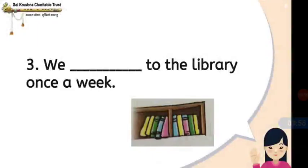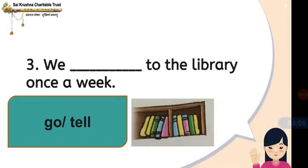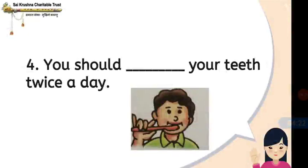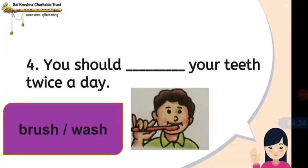Third question: We dash to the library once a week. The options are go or tell. We go to the library once a week. Fourth question: You should dash your teeth twice a day. The options are brush or wash. You will just wash your mouth and come to school — no, you should not do like that. You should brush twice a day. The answer is brush — you should brush your teeth twice a day.